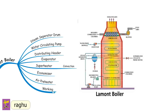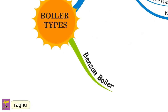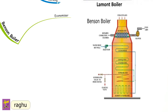In the La Mont boiler, the main difficulty experienced is the formation and attachment of bubbles on the inner surfaces of heating tubes. These attached bubbles reduce heat flow and steam generation by offering higher thermal resistance than a water film. This difficulty is overcome in the Benson boiler, which is the first type of drumless boiler — also called a once-through boiler. Feed water from the feed tank is supplied to the economizer, which preheats the feed water before it enters the radiant evaporator.